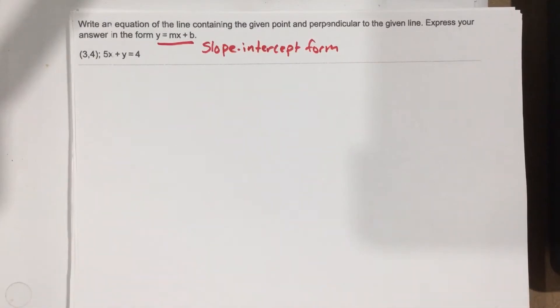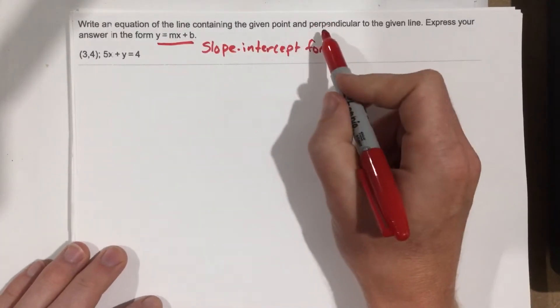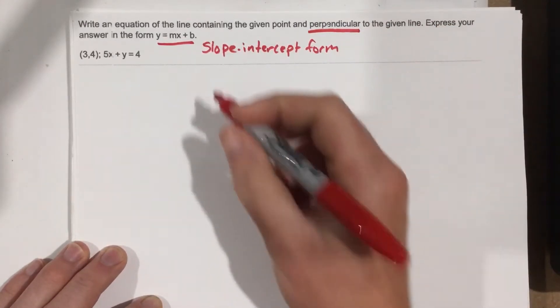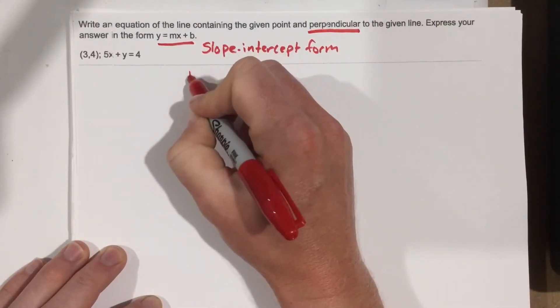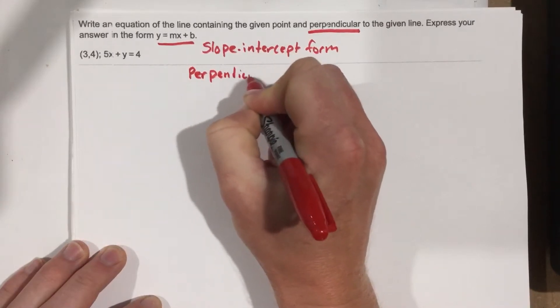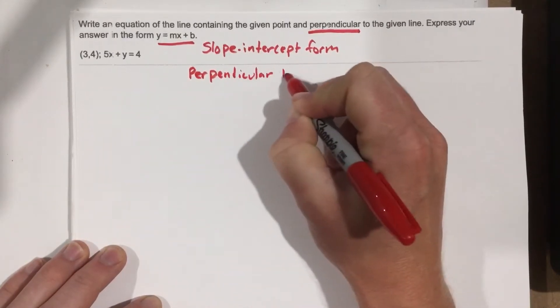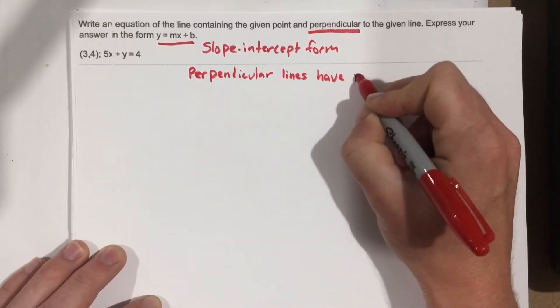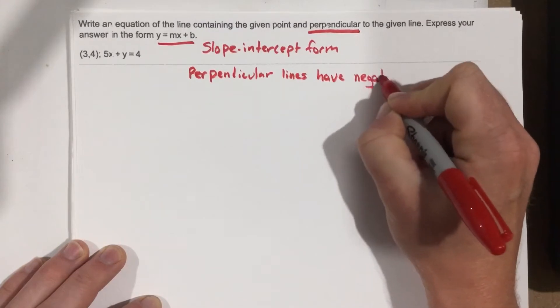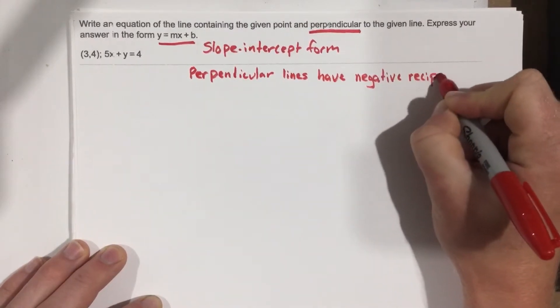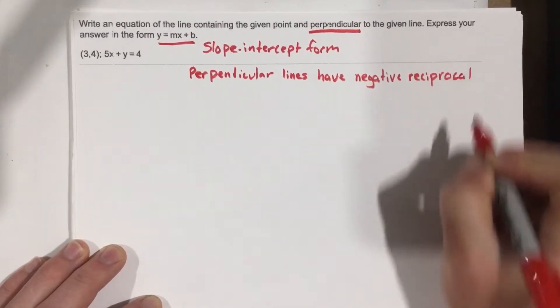Now, they want us to write a line that's perpendicular. What does it mean to be perpendicular? Well, perpendicular lines have negative reciprocal slope.